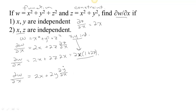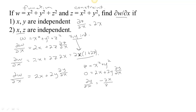Now we find the derivative of y with respect to x, assuming x and z are independent. Starting from the constraint z equals x squared plus y squared, we take the derivative of both sides with respect to x. Since x and z are independent, the derivative of z with respect to x is 0. The derivative of x squared is 2x, and the derivative of y squared is 2y dy/dx. That means dy/dx equals negative 2x over 2y, or negative x over y. Substituting that in, dw/dx in this case is 2x plus 2y times (negative x over y); the y's cancel and we get 2x minus 2x equals 0.